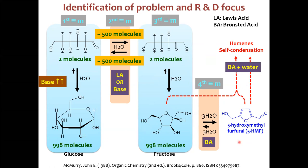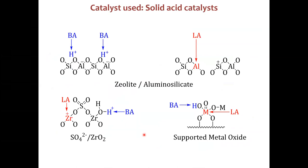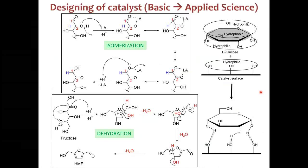For this glucose-to-HMF transformation, different catalysts are required for different steps. Isomerization from glucose to fructose requires a base catalyst or Lewis acid/base. Dehydration of fructose to HMF requires Bronsted acidity. So when synthesizing a catalyst for this transformation, you need a catalyst that has both Lewis acidity and Bronsted acidity on the catalyst surface. The Bronsted acidity concentration is very important — too little gives low yields, optimum gives good yields, but too much causes humin or char formation.